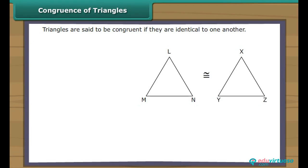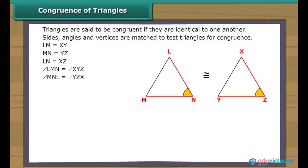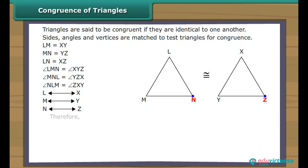Congruence of triangles. Triangles are said to be congruent if they are identical to one another. Sides, angles, and vertices are matched to test triangles for congruence. Side LM equals side XY, side MN equals side YZ, side LN equals side XZ. Angle LMN equals angle XYZ, angle MNL equals angle YZX, angle NLM equals angle ZXY. Vertex L corresponds to vertex X, vertex M to vertex Y, vertex N to vertex Z. Therefore, triangle LMN is congruent to triangle XYZ.